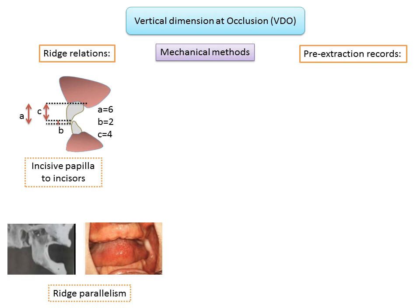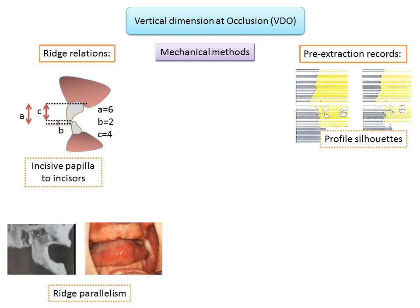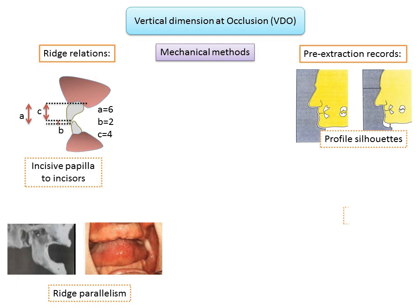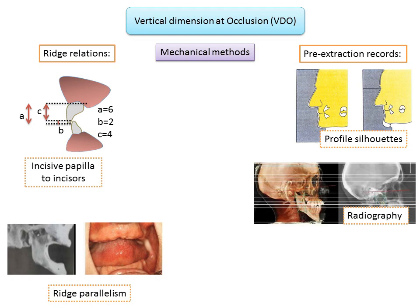Pre-extraction records such as facial silhouettes: an accurate silhouette made from cardboard or contoured with wire using the patient's photograph can be used as a template. Since the silhouette is taken from a pre-extraction photograph, it shows the vertical dimension at rest. It is positioned on the patient's face when recording VDO — the chin should be at least 2 millimeters above the lower border of the silhouette. Cephalometric profile radiographs and radiographs of the condylar fossa can also be used, though their use is limited due to inaccuracies in technique.